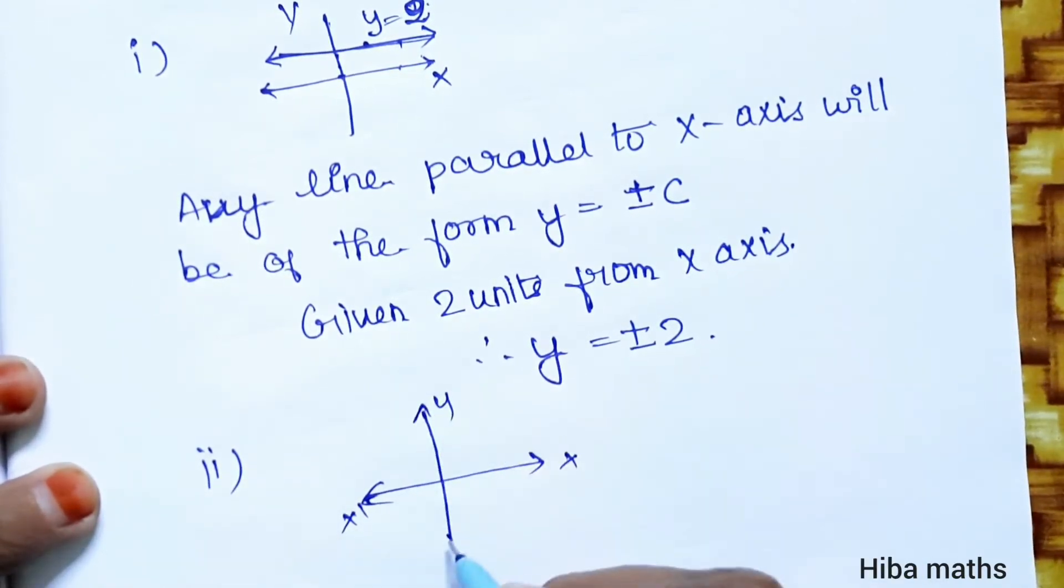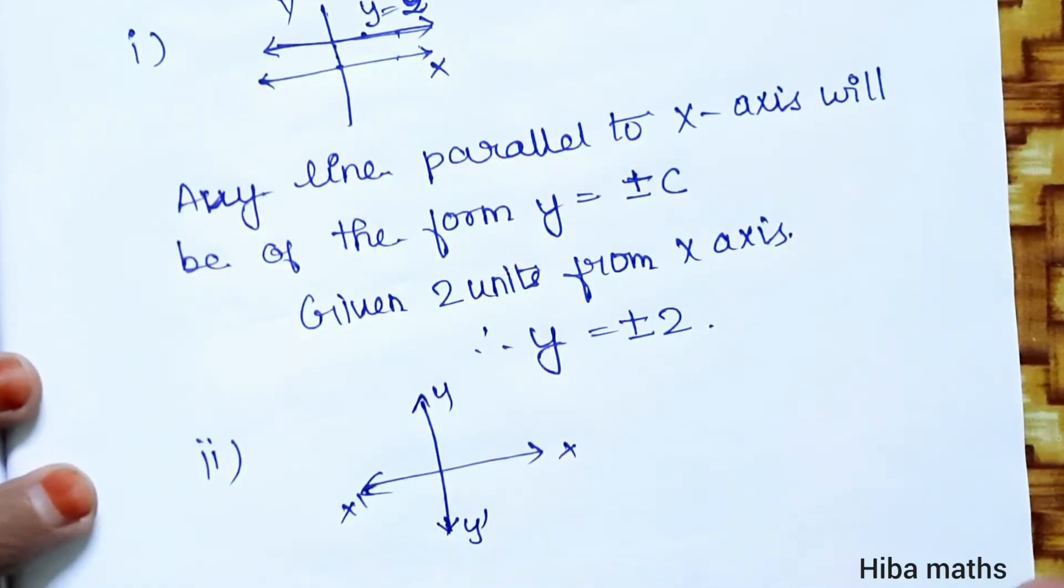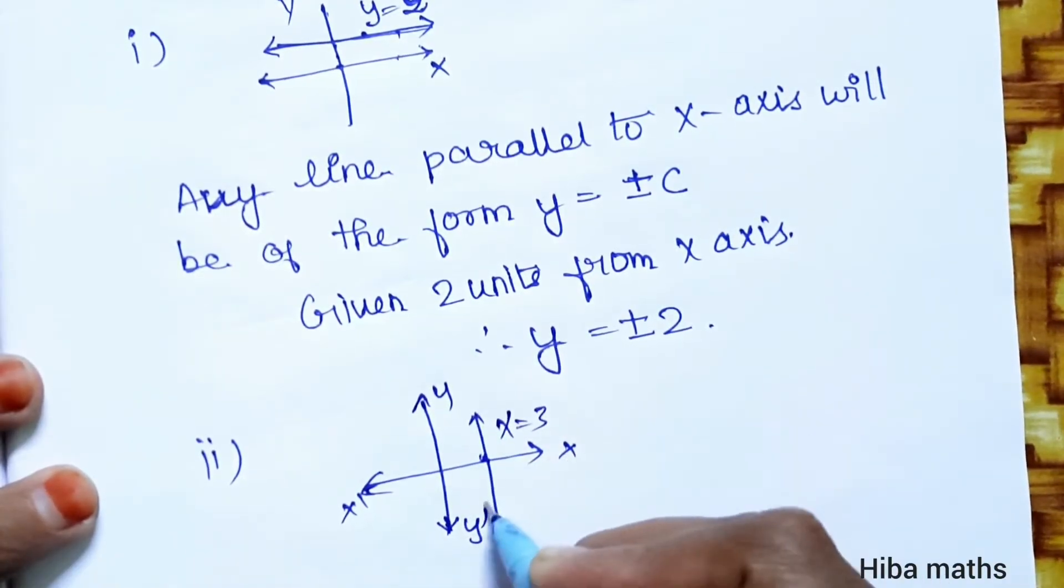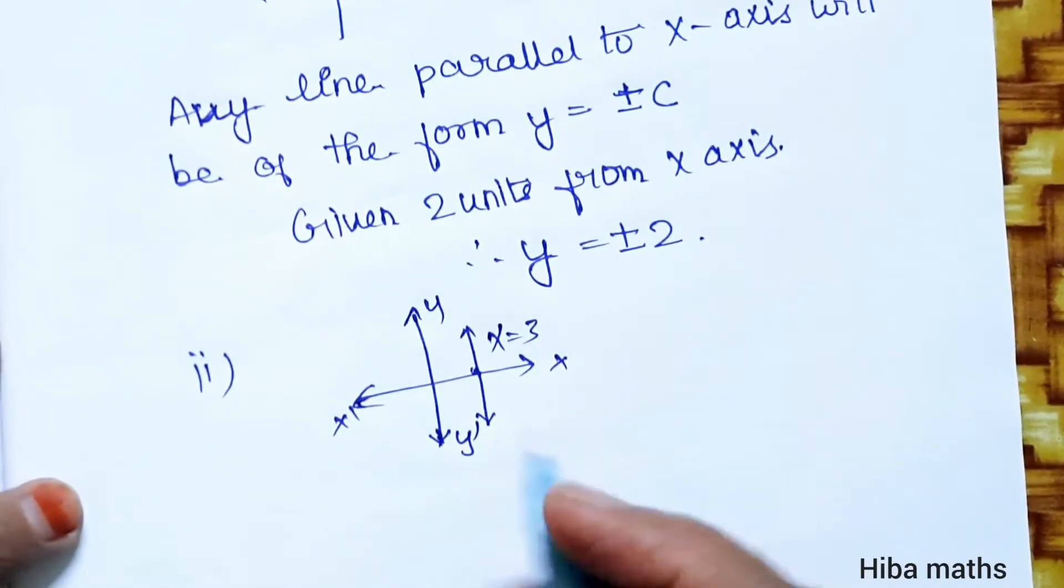For the y-axis: 3 units from the y-axis. Understand that any line parallel to the y-axis,